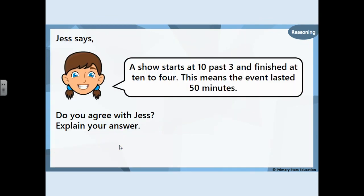Now here's a reasoning question. Jess says a show starts at 10 past 3 and finishes at 10 to 4, meaning the event lasted 50 minutes. Do you agree with Jess? Use your clocks and count from 10 past 3 to 10 to 4. Is it actually 50 minutes? If so, you agree. If not, why not — can you explain your answer? Have a go on your worksheet or workbook.